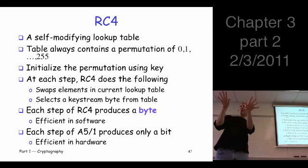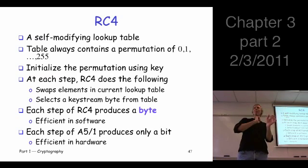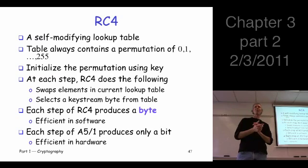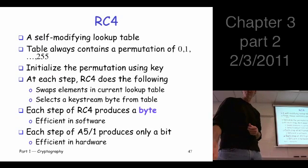We scramble those things around based on the key, then we grab a byte and we're good to go. We start grabbing bytes, and that's what we use to encrypt or decrypt. That's the key stream — that's how we generate the key stream.